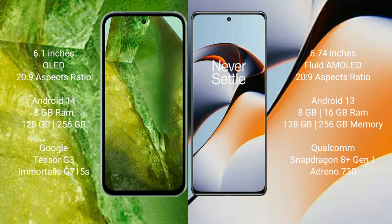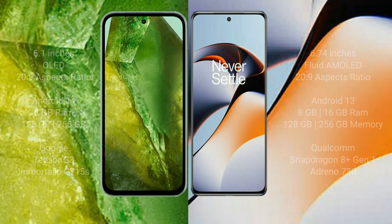Google Pixel 8a comes with 8GB RAM and 128GB to 256GB internal storage, Google Tensor G3 processor and GPU G715H. OnePlus 11R comes with 8GB, 16GB, or 18GB RAM and 128GB to 256GB internal storage, Qualcomm Snapdragon 8G1 processor and GPU Antio 730.